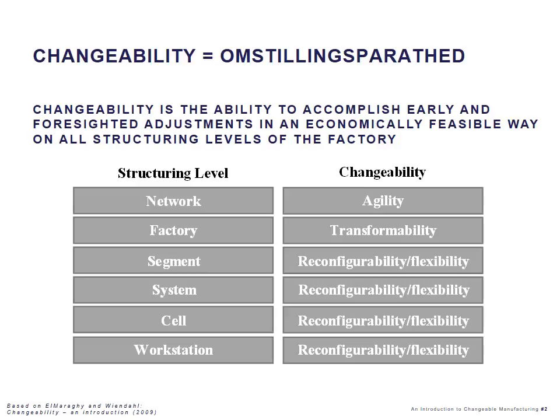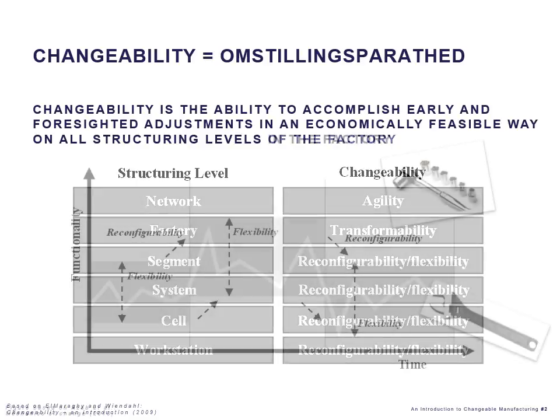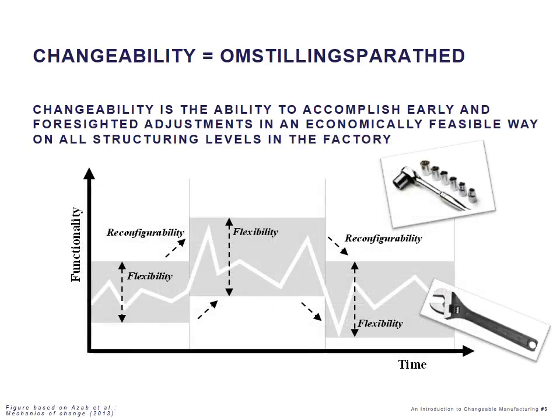However, going beyond those levels, we usually say that changeability is accomplished through agility and transformability. If we look at the manufacturing system level, which is the focus of this course, we usually implement changeability through a combination of flexibility and reconfigurability.